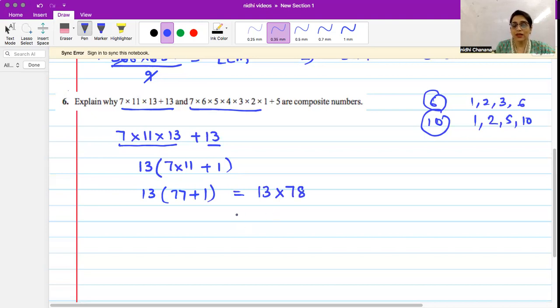We can further break this down using prime factorization. We can write 78 as 3 × 2 × 13. Now here, 13, 3, and 2 are all prime numbers. Prime numbers have only two factors: one and the number itself.